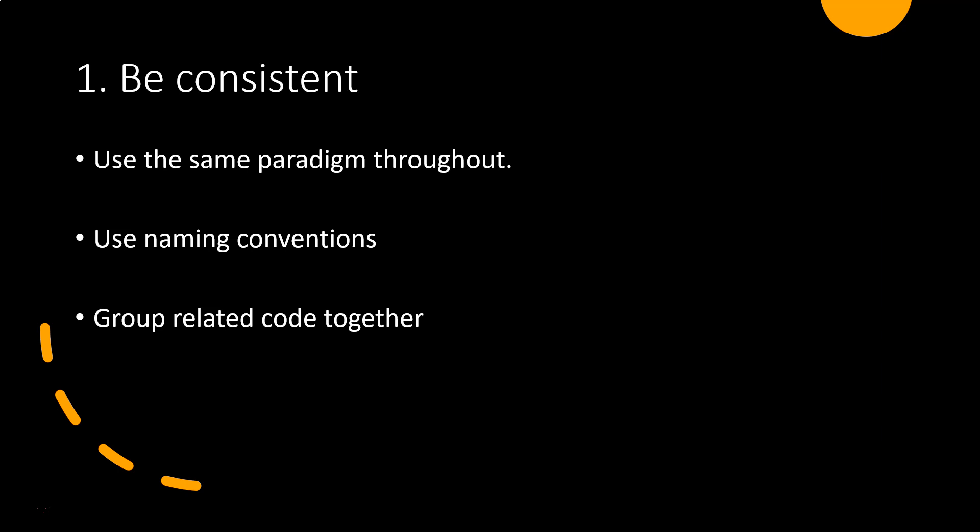Tip number one: whatever project you're working on, be consistent with the way that you write CSS. There's more than one system for styling a web page. For example, do we prefer to build out entire components in our style sheets or simply utilities? What type of naming convention do we use for our classes? Do we use classes at all, or do we style specific elements? How much of our CSS is written in external style sheets versus internal style sheets?